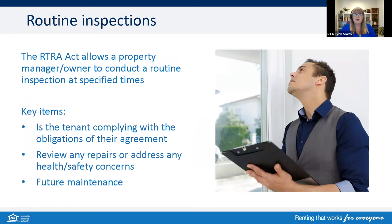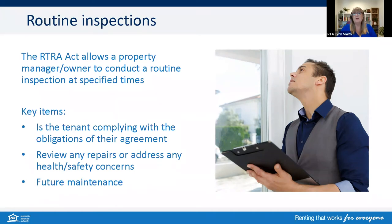Routine inspections are carried out by owners or their managing agents. Most importantly, the tenant needs to be informed before the inspection occurs and notified of the date and time. The Act states how many inspections can occur within a 12-month period: for general tenancies, no more than four and cannot be less than three months apart unless the tenant agrees; for rooming accommodation residents, no more than once a month unless the resident agrees. During inspections, key items looked at include whether the tenant is complying with their obligations, viewing past or current repairs, health and safety concerns, and future maintenance planning.